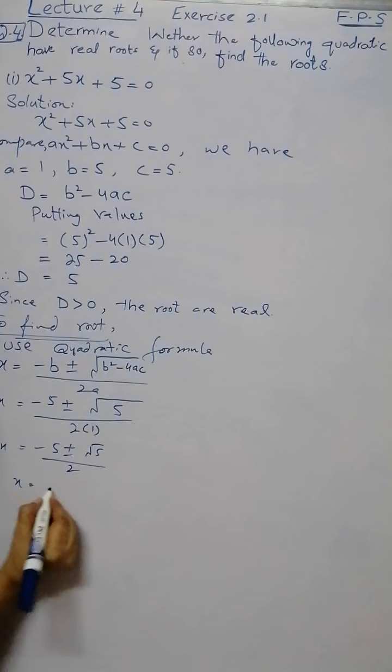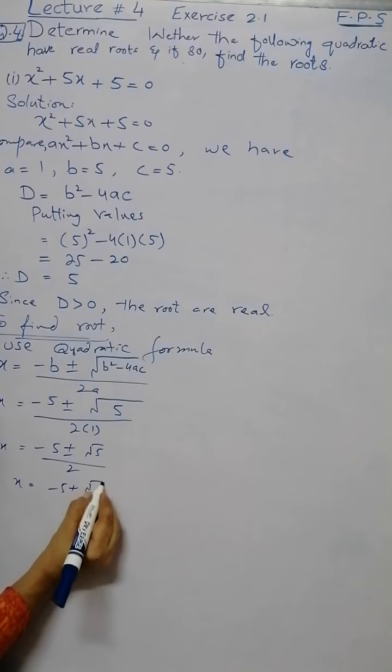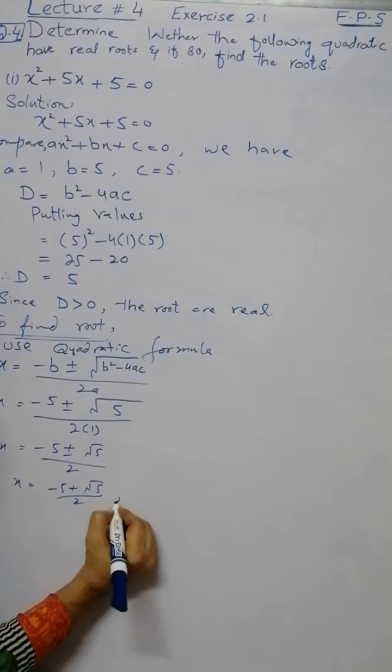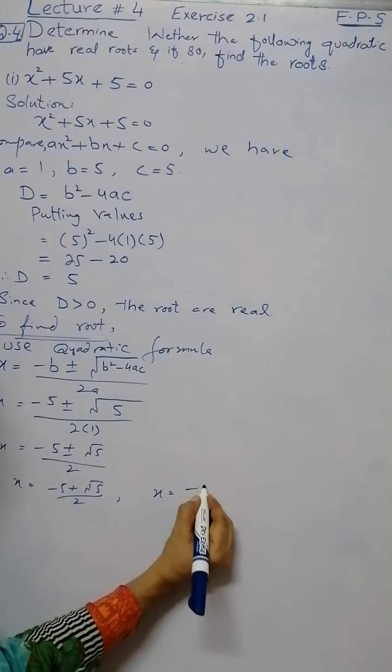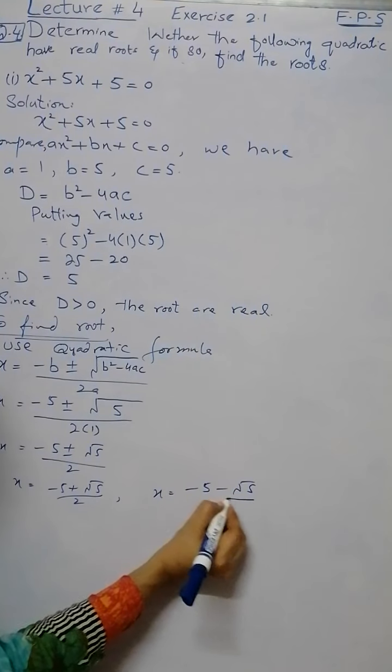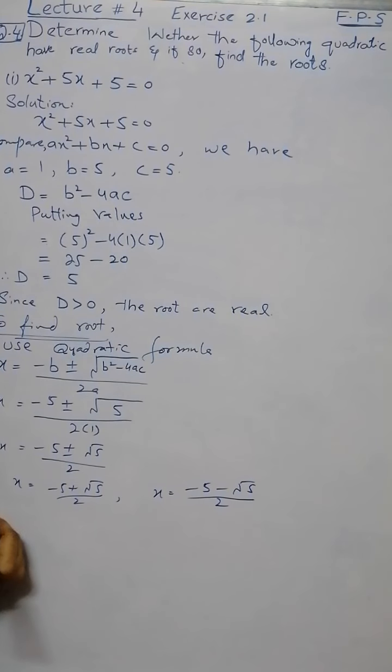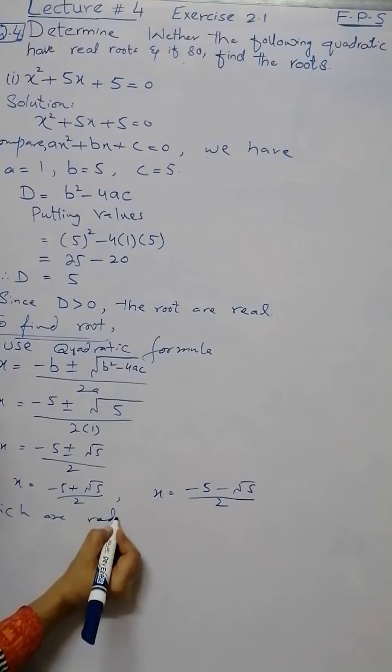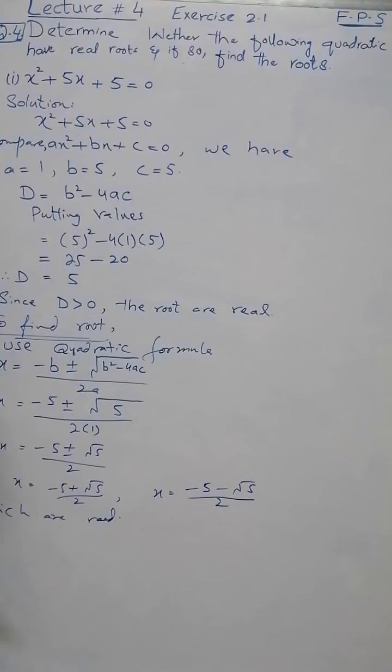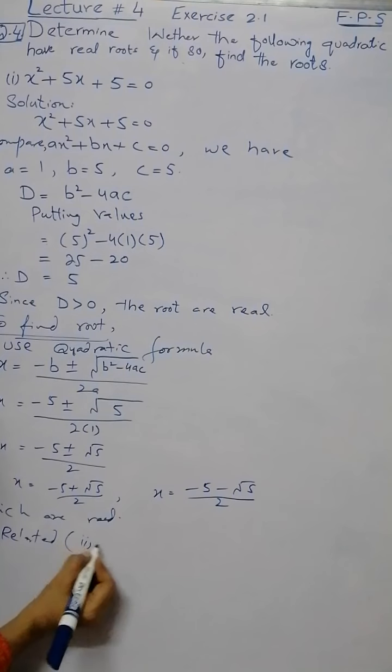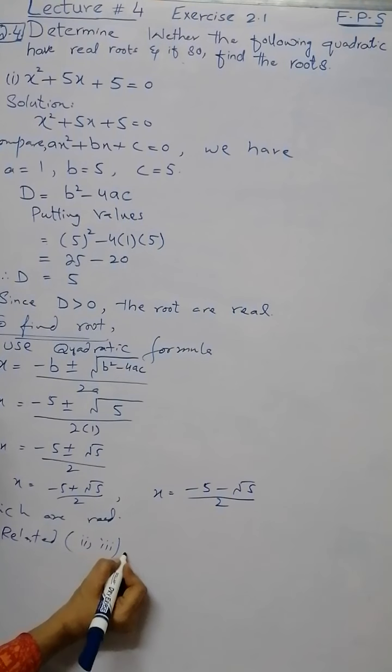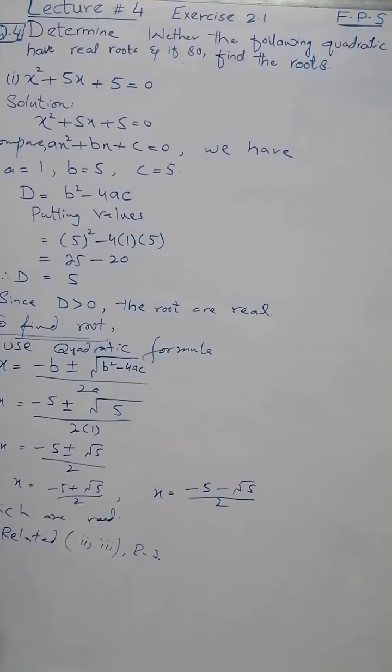Therefore x = (-5 + √5)/2 and x = (-5 - √5)/2, so it has two roots which are real. I hope you understand this and remaining parts of question number 4 must be practiced by the students. Thanks.